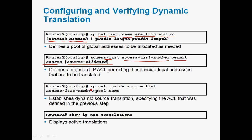Next, in global mode, we implement both statements to create dynamic NAT: IP NAT inside source list [access-list number] pool [pool-name]. The access list number and pool name must match those defined in the previous statements. This establishes dynamic source translations. After configuring, verify using 'show IP NAT translations' in privilege mode, which displays the active translations.